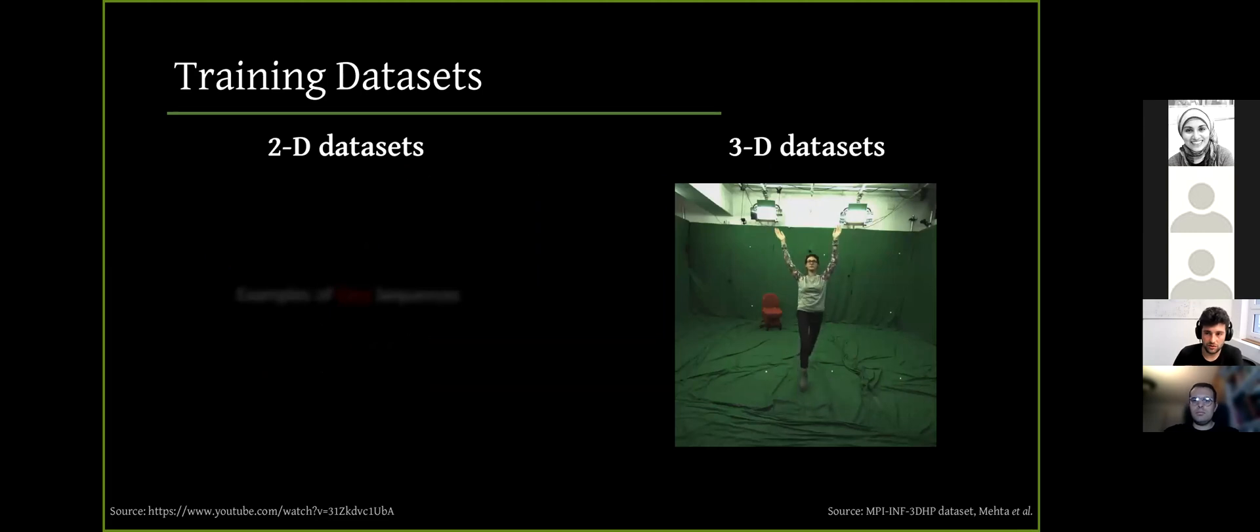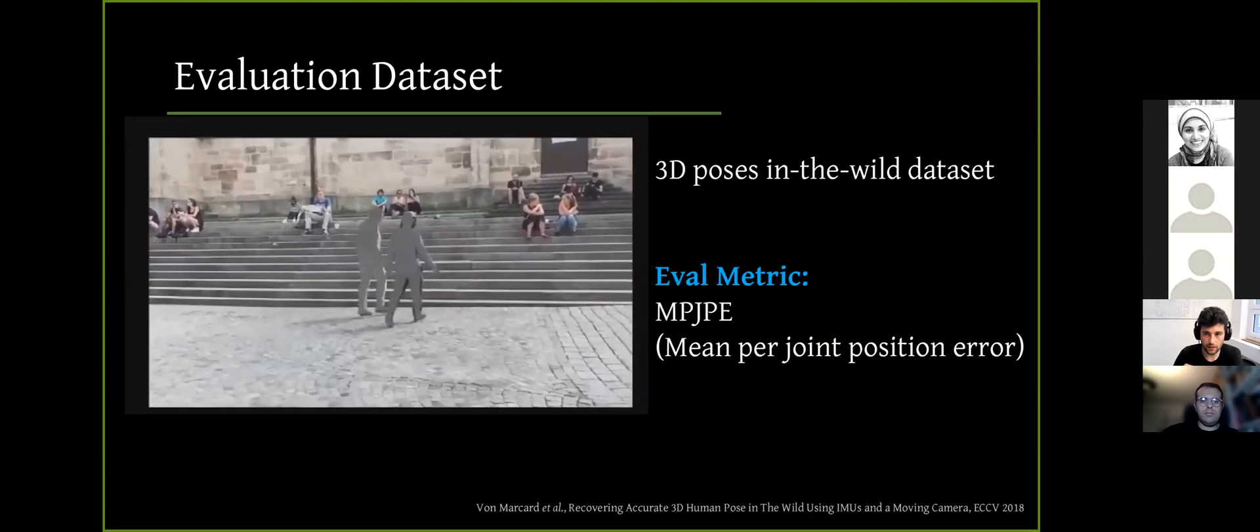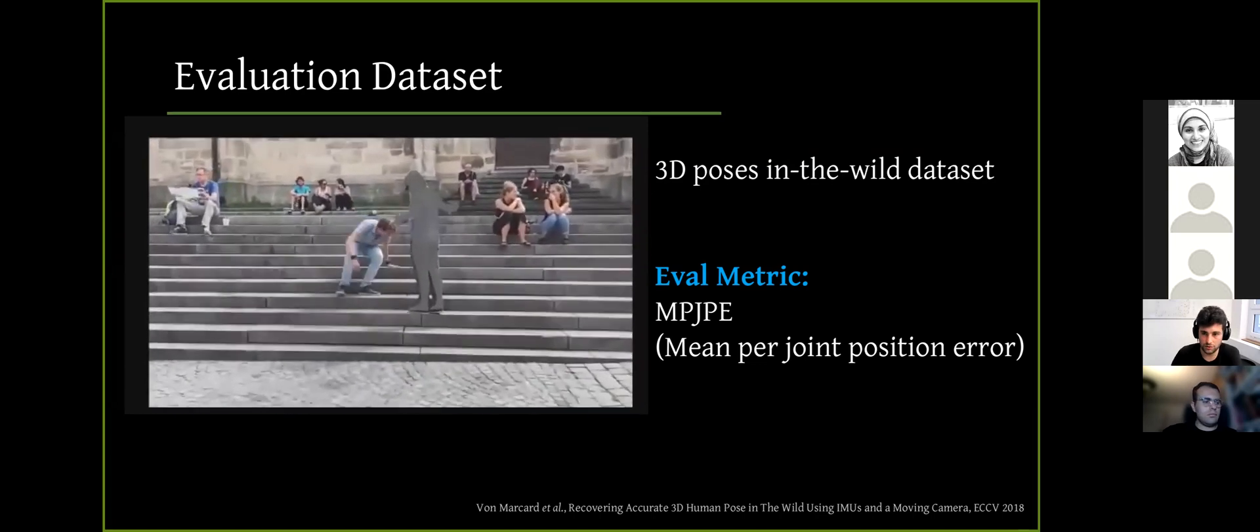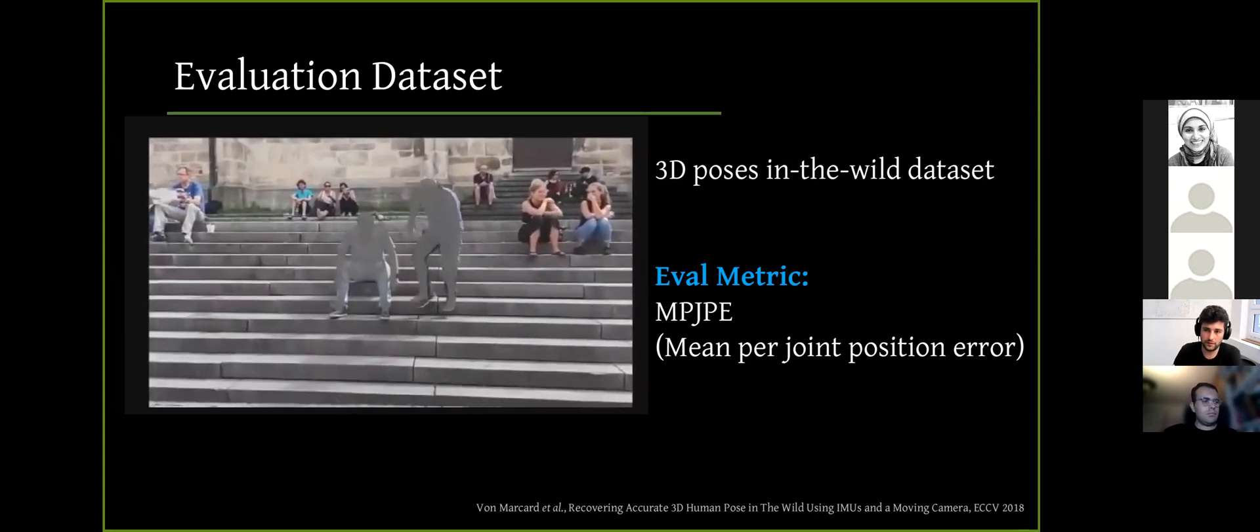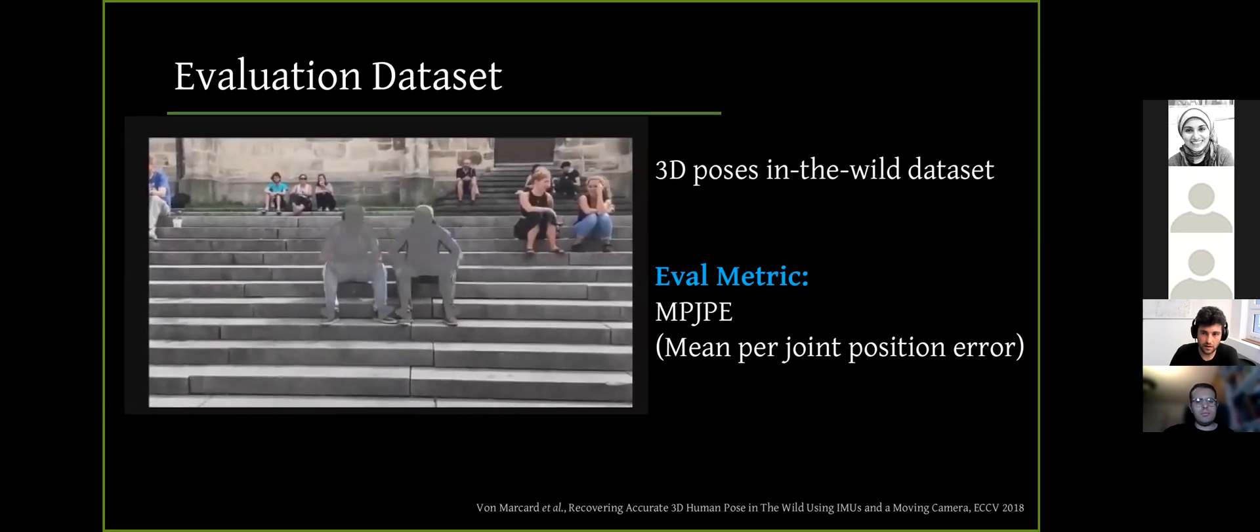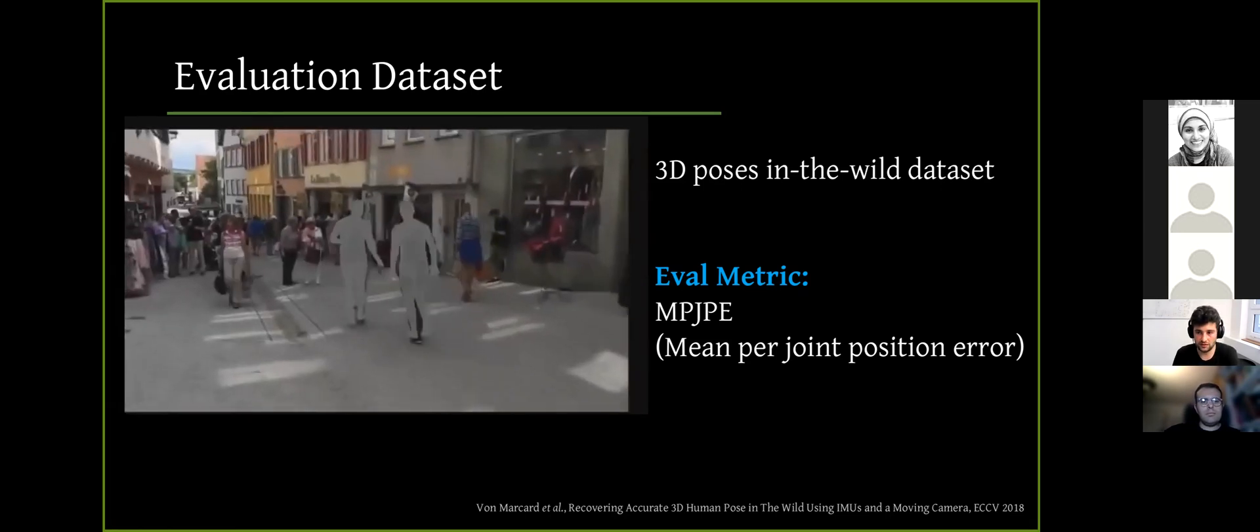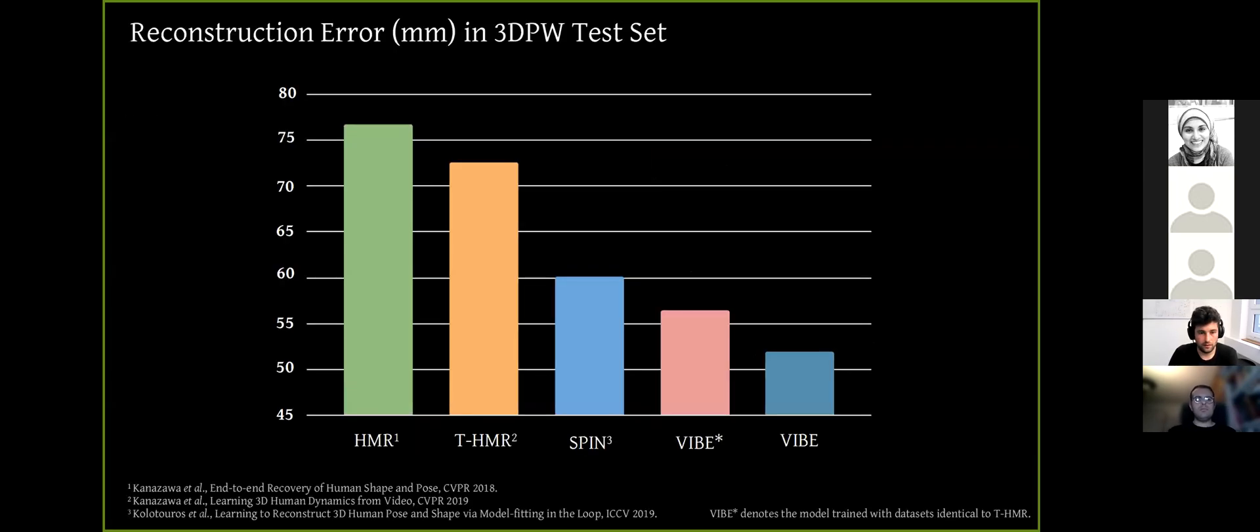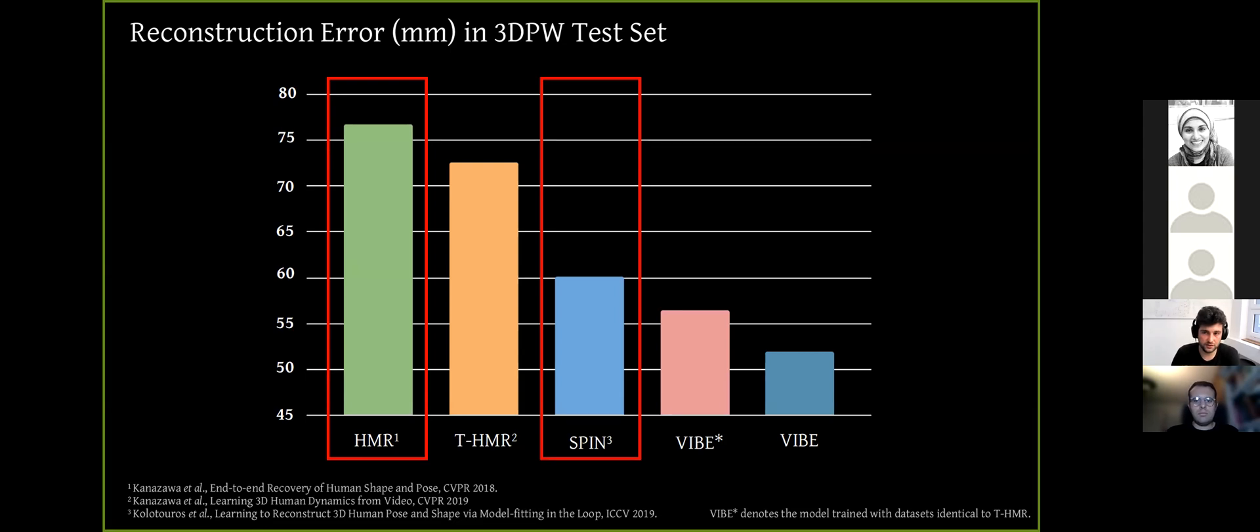To train our method, we use a mixture of 2D and 3D datasets, similar to previous work. And here I will present some of the quantitative results. So for the evaluation, an in-the-wild benchmark called 3DPW is used, and we report the mean per joint position error to evaluate the performance. Basically, this metric measures the Euclidean distance between predicted and the ground truth joints. This bar chart shows the joint error on the y-axis and different methods on the x-axis. Lower error means better performance.